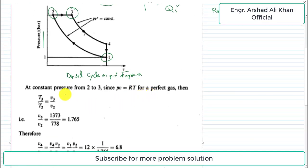To find T4, we need other relationships. At constant pressure from 2 to 3, using the ideal gas equation PV equals RT, we have T3 by T2 equals V3 by V2. Therefore V3 by V2 equals 1373 divided by 778, which equals 1.765.